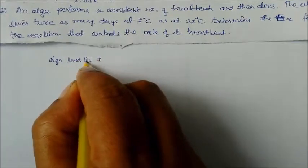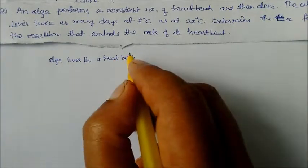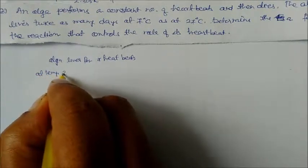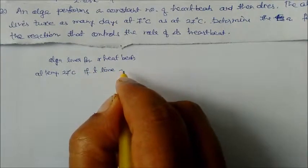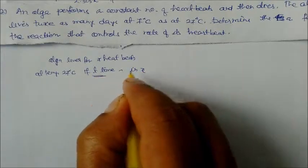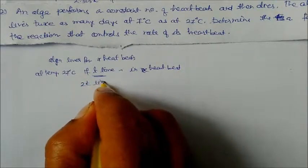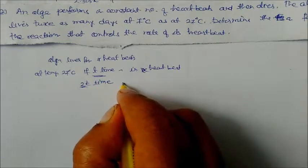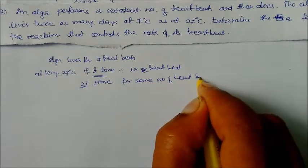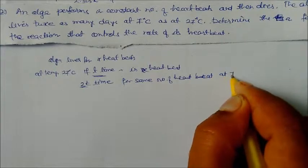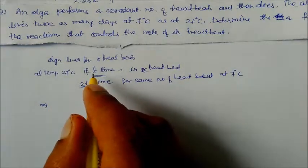Let us assume the alga lives for x heartbeats. At 27 degree centigrade, time t is required for x heartbeats. At 7 degree centigrade, 2t time is required for the same number of heartbeats. We now use the logarithm equation.